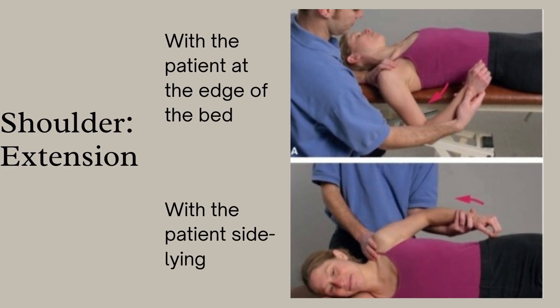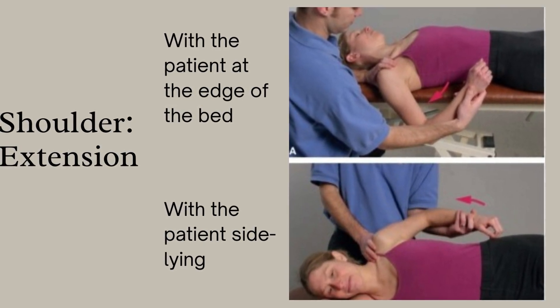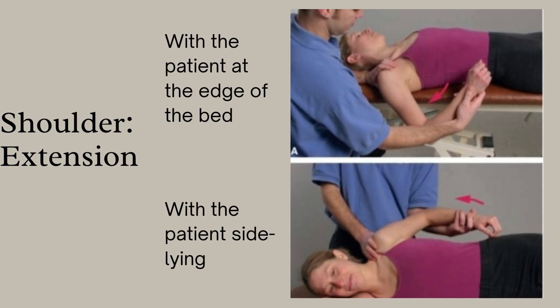After shoulder flexion, the next range of motion technique for the shoulder is shoulder extension. There are also two parts to the slide: A is showing shoulder extension with the patient at the edge of the bed, and B is showing shoulder extension with the patient in sidelying position. How to place the hands is also demonstrated.